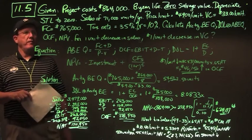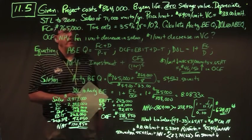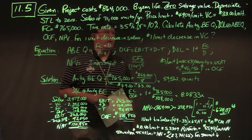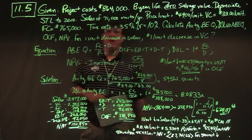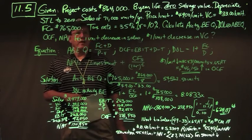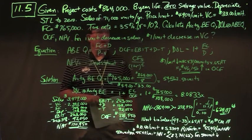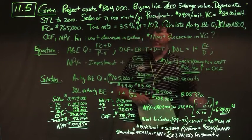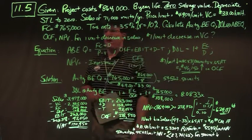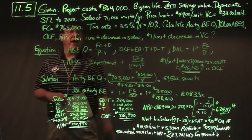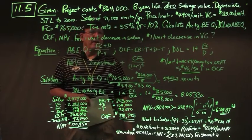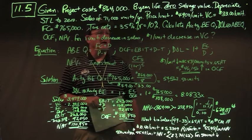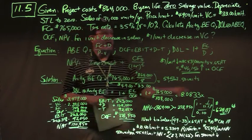In problem 11.5, a project costs $864,000 with an 8-year life, zero salvage value, depreciated straight line to zero. We expect to sell 71,000 units per year at $49 a unit, variable cost $33 a unit, fixed costs $765,000, tax rate 35%, and required rate of return 10%.